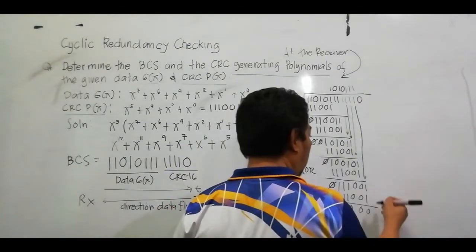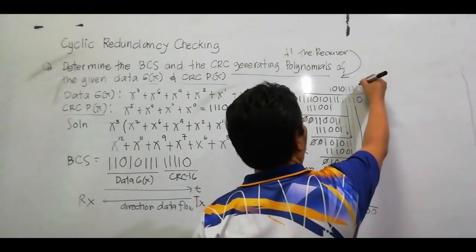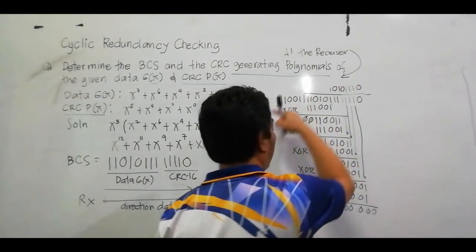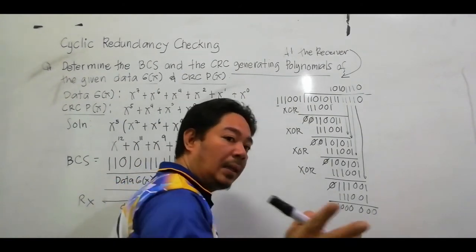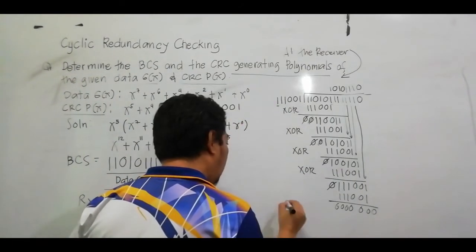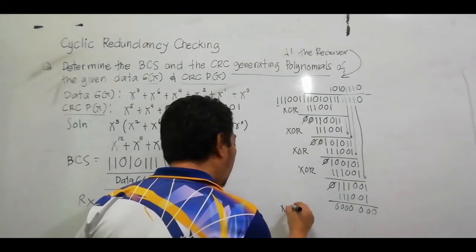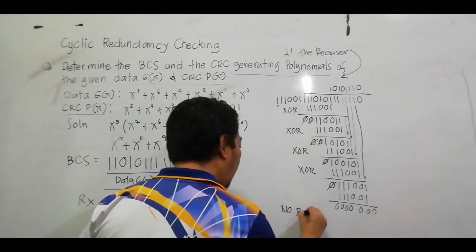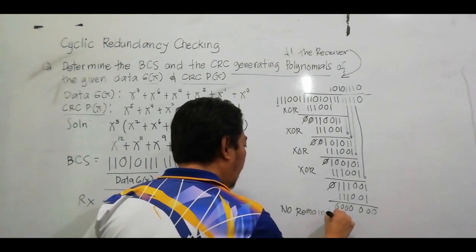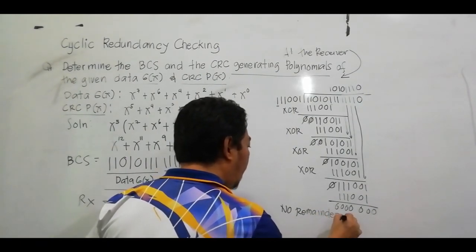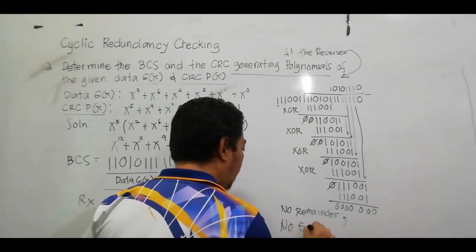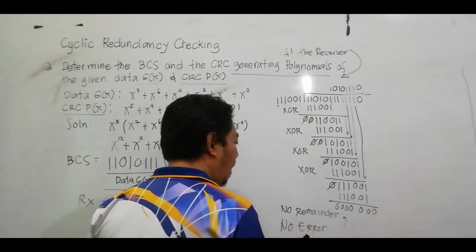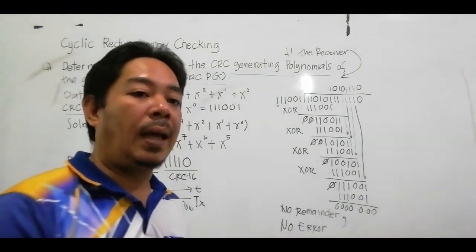Bring down 0 — therefore our answer here is 0. So there is no remainder. Take note: no remainder means no error.